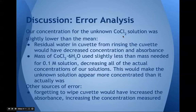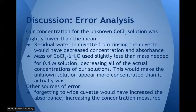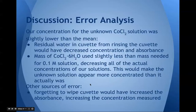Error analysis: A couple of factors that could have caused errors were residual water in the cuvette from rinsing, which would have decreased the concentration and absorbance of the solution. Or the mass of CoCl2·6H2O used was slightly less than the mass needed for the 0.1 molar solution, which would decrease the actual concentrations of our solutions and also make the unknown solution appear more concentrated than it actually was. Another source of error could have been forgetting to wipe the cuvette, which would have increased the absorbance and the concentration measured.